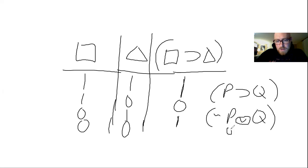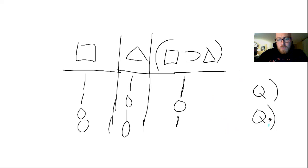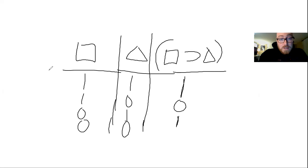If P were false, what would that make the tilde? If P were false, that would make tilde-P true. And if Q were true, then we've got either true or true — that means the wedge would actually be true. And that's exactly what this says here. So I know it seems counterintuitive, but there's only one condition where a material implication is false, and that's when you've got a true antecedent and a false consequent. So if box is false and triangle is false, that means if-box-then-triangle is actually true.